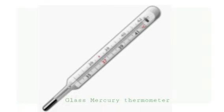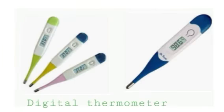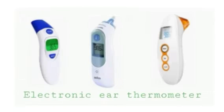There are varieties of thermometers that we use, like digital thermometers. This type of thermometer is the fastest and most accurate. There are also electronic air thermometers, which use infrared technology to get their temperature reading. Despite being expensive, they are a lot easier to use on babies and young children.